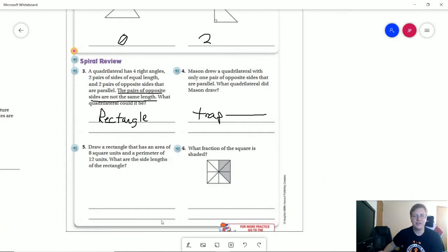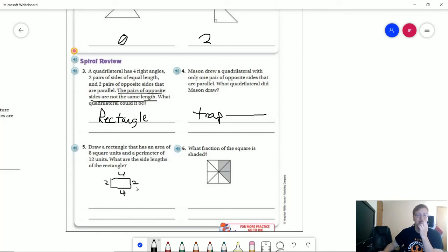Number five, draw a rectangle that is an area of eight and a perimeter of twelve. Here we go. So two, two, four, four. So I would go ahead and accept the answer like this because that gives me all of the information I need to know. I don't normally require my students, if they show it like this, to go ahead and rewrite it down below in word form.